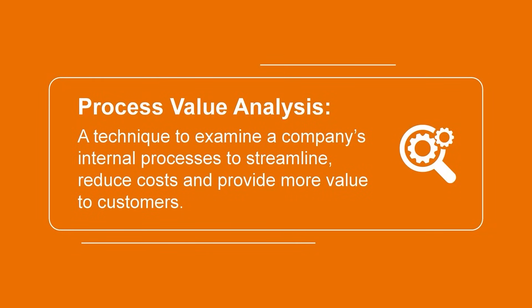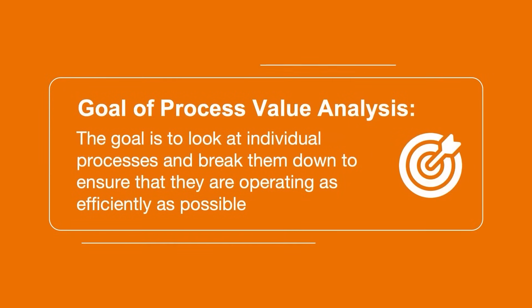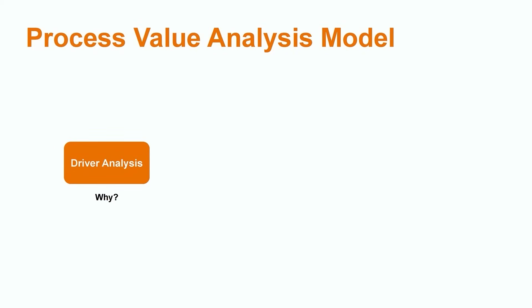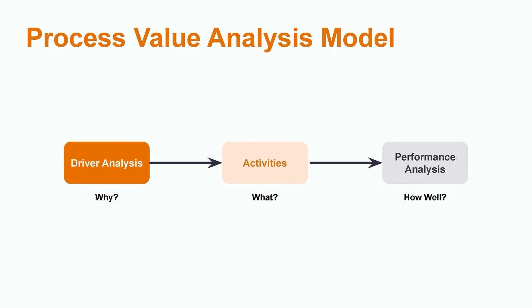Process value analysis is a part of activity-based management that companies use to examine their internal processes in an effort to streamline them so that they can reduce costs and provide more value to their customers. The goal is to look at individual processes and break them down to ensure they're operating as efficiently as possible. This is done by employing the process value analysis model with three steps: driver analysis, which asks why the company is doing what they're doing; the activities step, which looks at what actions they're currently taking; and performance analysis, which looks at how well the company is performing the process.